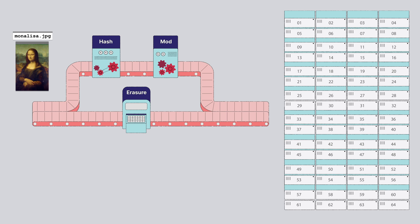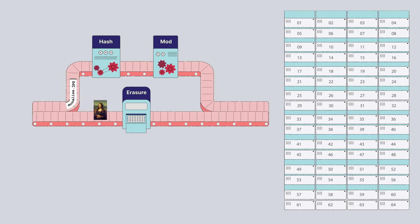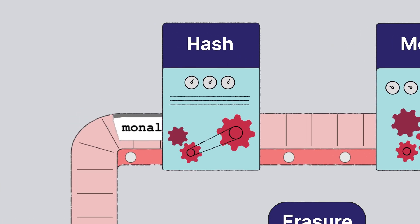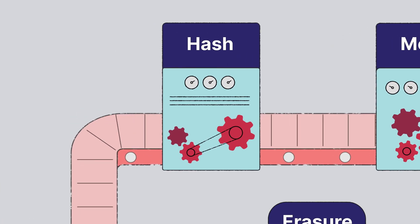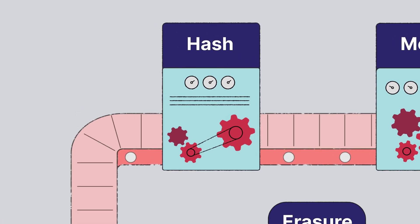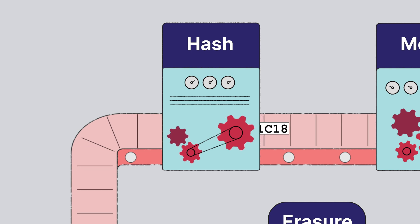When MinIO receives an object, it is sent through a deterministic process to decide where to store the object within the MinIO cluster. First, a deterministic hash function is applied to the object name, creating a unique hash value.